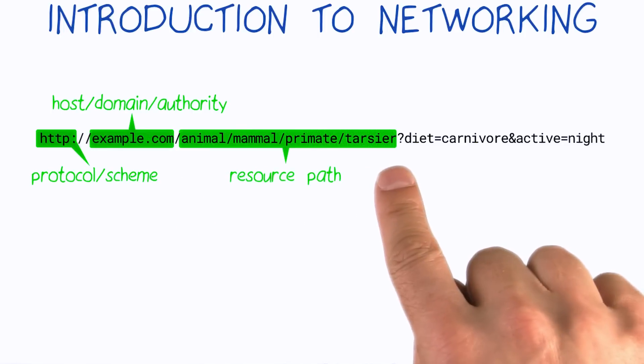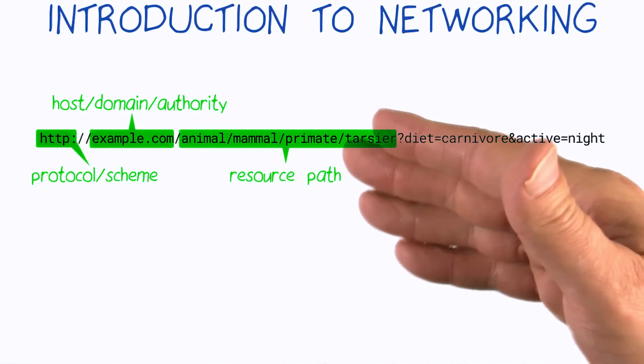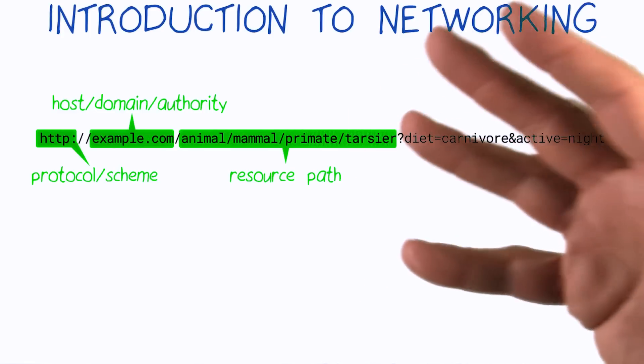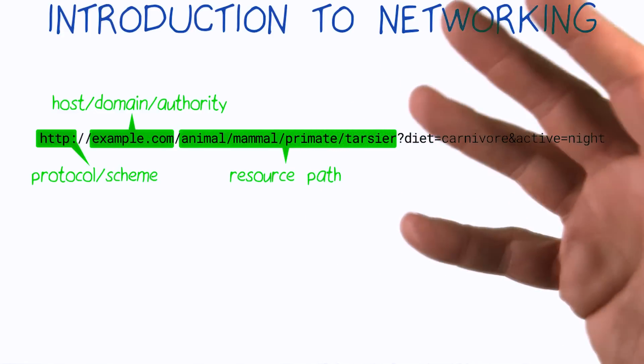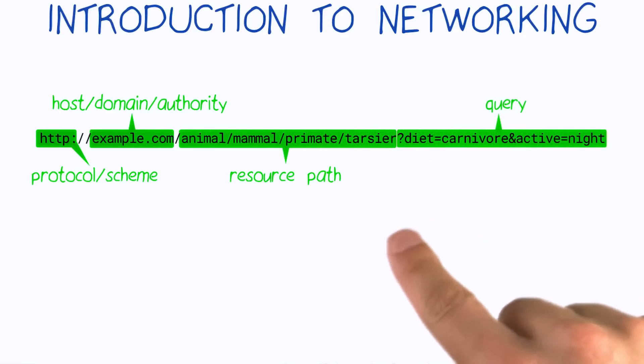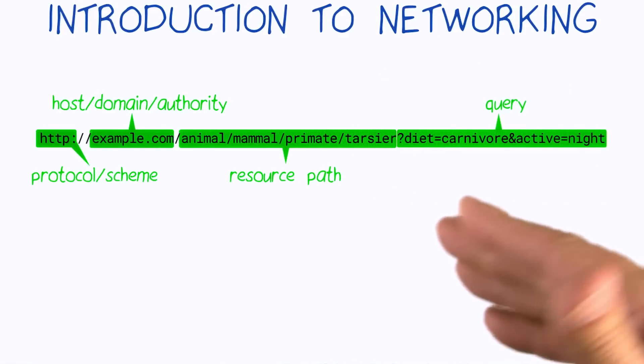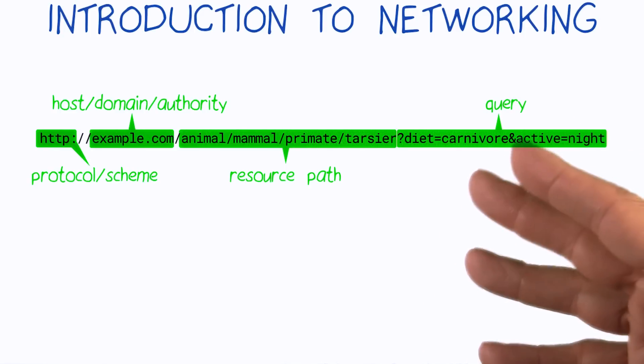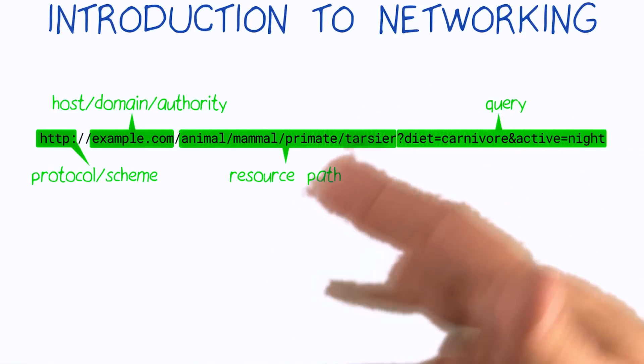The next part is the resource path. This is analogous to a file or folder structure on your computer or some other hierarchical organization of information. The final part is called the query. The beginning of the query is indicated by the question mark. The query is an optional way to include information about things you're looking for, like search terms or categories of information.